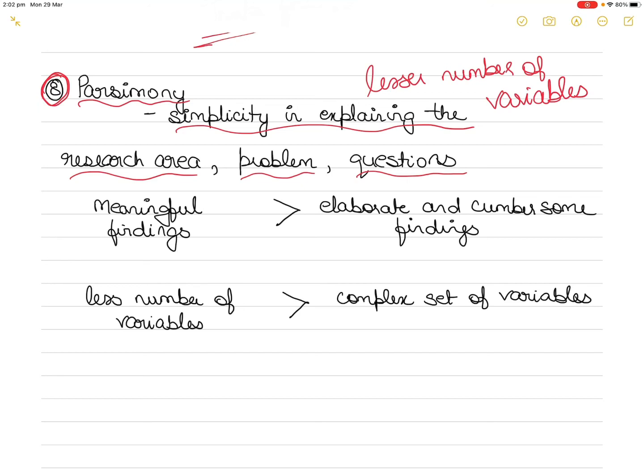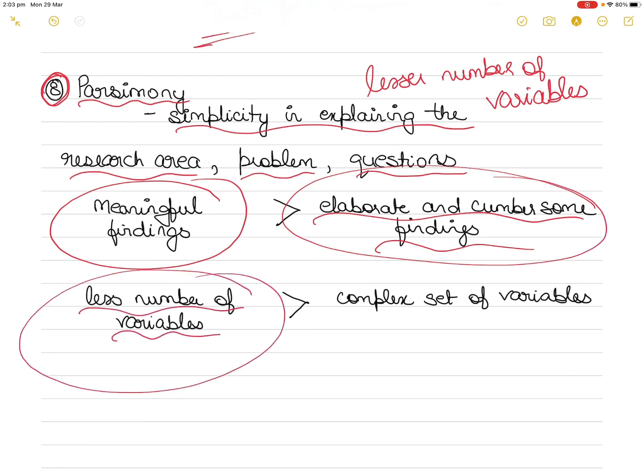Imagine, would your research be more impactful if you have certain meaningful findings or you have elaborate and cumbersome findings which are difficult for people to understand? Try to go with less number of variables that you have researched thoroughly, or a complex set of variables that you could not carry out in-depth research for due to lack of time.